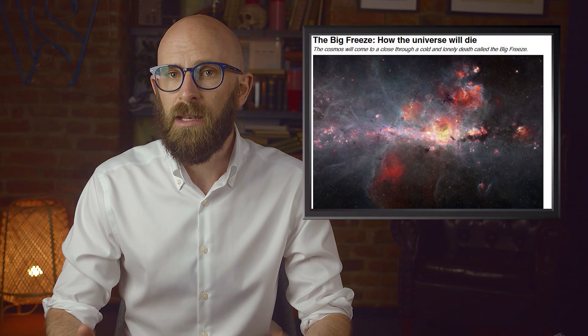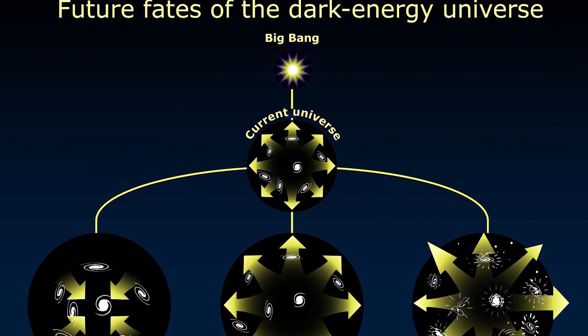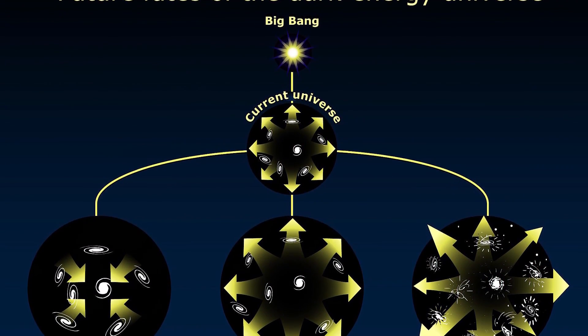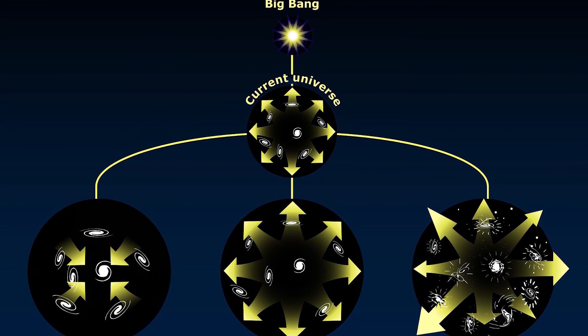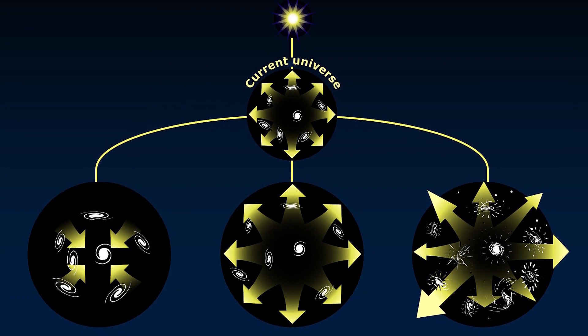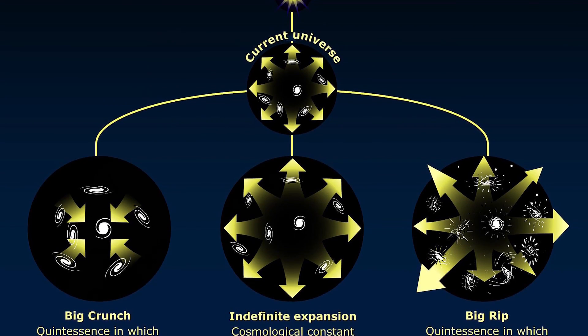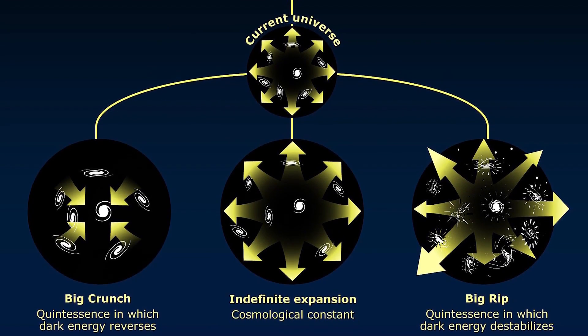Another possibility is that dark energy may be able to build up faster than the universe expands over time. We'll have too much energy, like a powder keg, that will explode, effectively tearing the universe apart in what has been called the Big Rip.